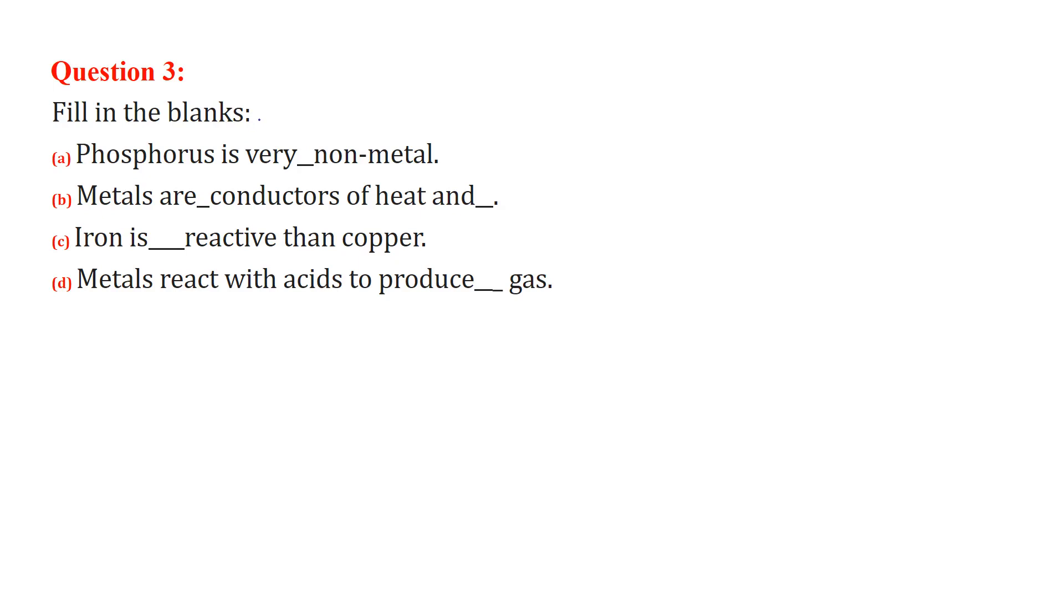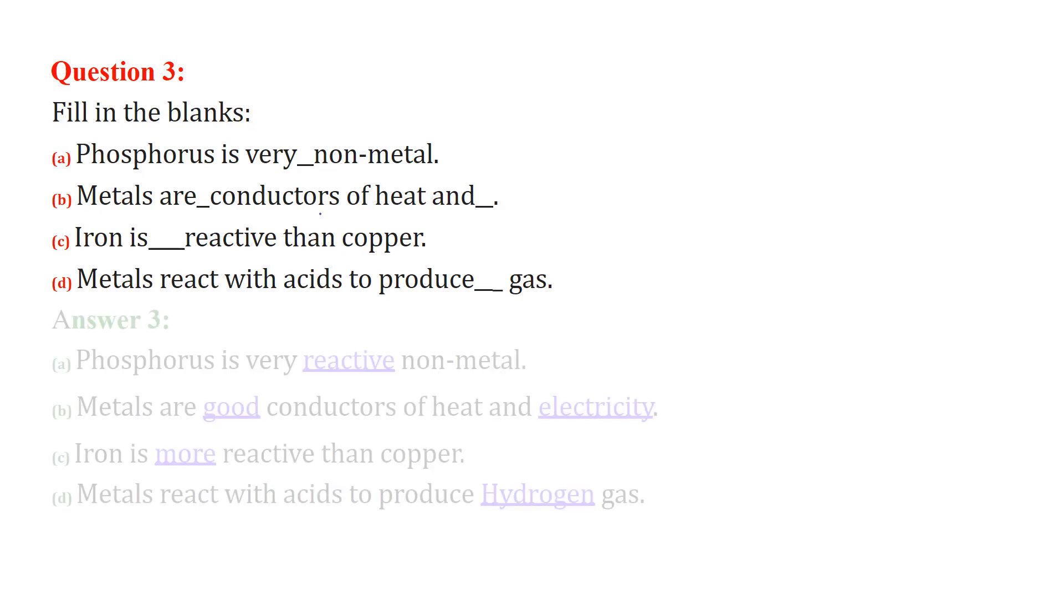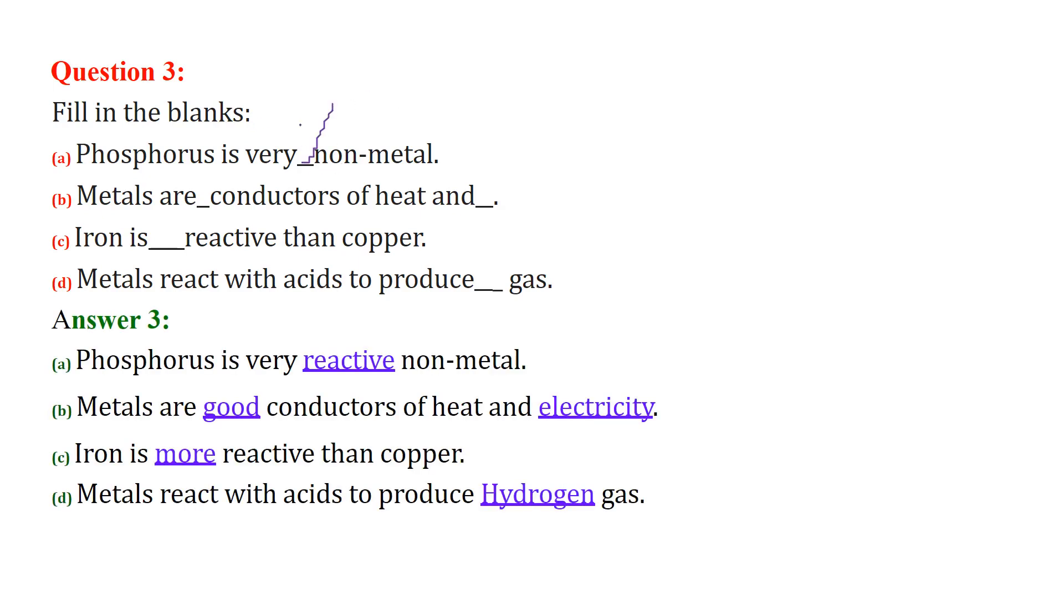Fill in the blanks. Phosphorus is very reactive non-metal. Metals are good conductors of heat and electricity. Iron is more reactive than copper and metal reacts with acids to produce H2, that is hydrogen gas.